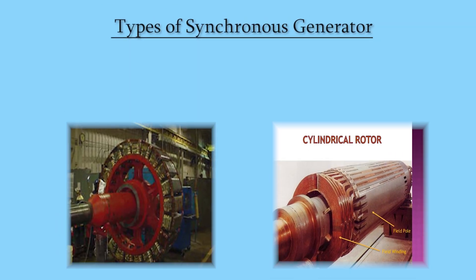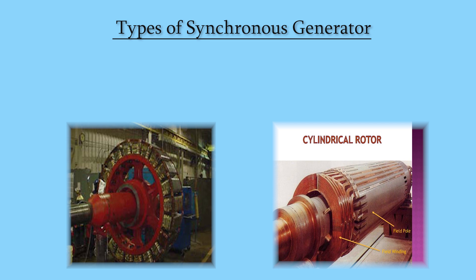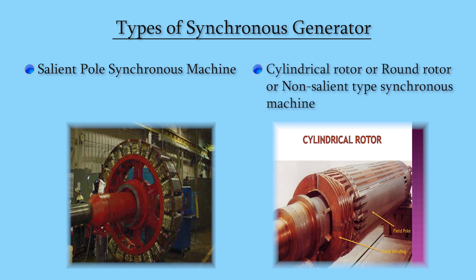There are two types of synchronous generators. In the salient pole synchronous machine, the poles are projected out of the surface with the winding placed in between. In the cylindrical rotor, you have a smooth surface. Salient pole synchronous machines are normally used for low speed operation, whereas cylindrical rotor machines are normally employed for high speed.